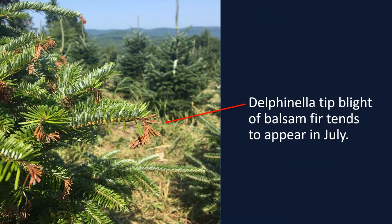Delvanella tip blight of balsam fir tends to appear in July. This disease causes slightly chlorotic needles to appear on new shoots in the spring. As the fungus progresses, the needles may be girdled by cankers at their bases. Finally, as the fungus moves into shoots, they begin to wilt and shrivel.